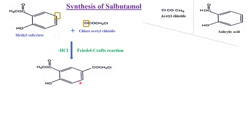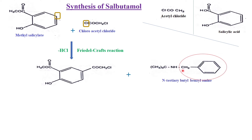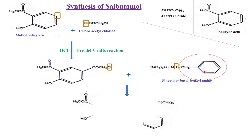Next, we add N-tertiary butyl benzylamine to this product. Benzylamine is a benzyl group with an amino group; in N-tertiary butyl benzylamine, a tertiary butyl group is attached to the nitrogen of benzylamine. By the addition of these two, the Cl combines with the H and is removed as HCl. The left CH2 group is then attached to the nitrogen, with one end of the nitrogen connected to the tertiary butyl and the other to the benzyl group.